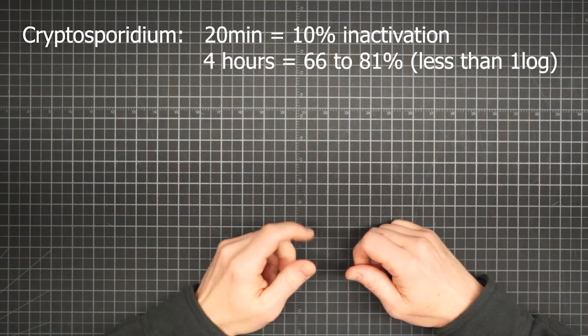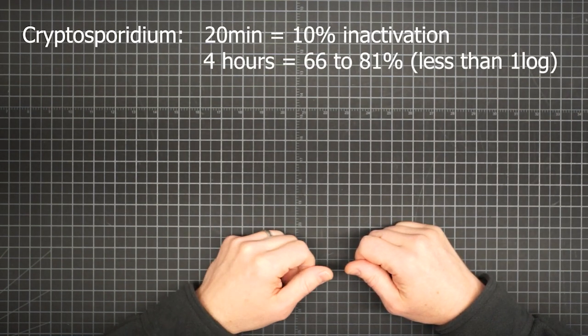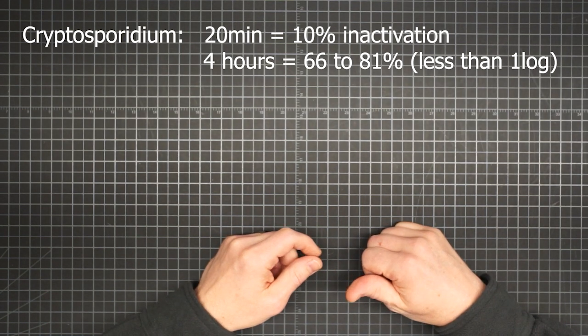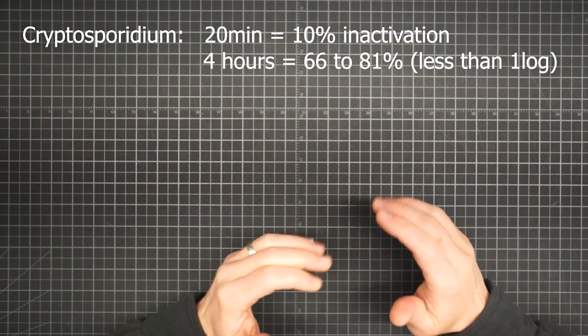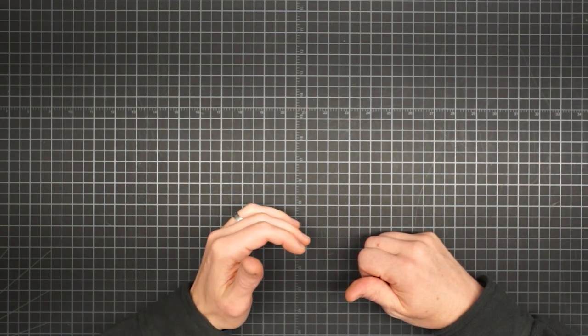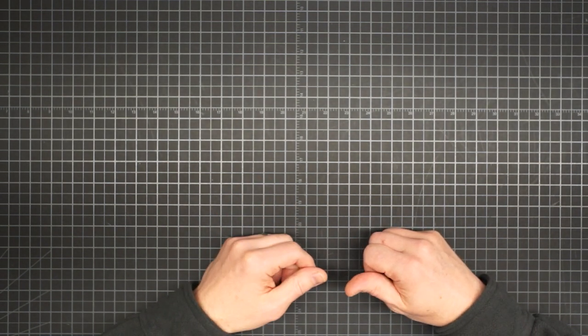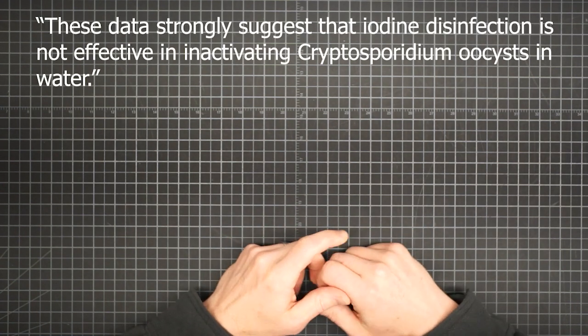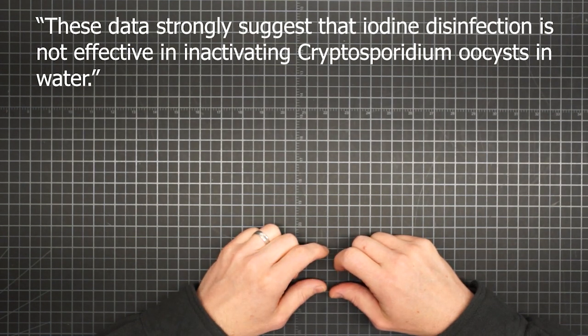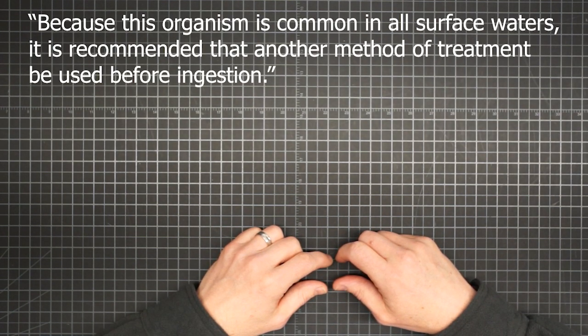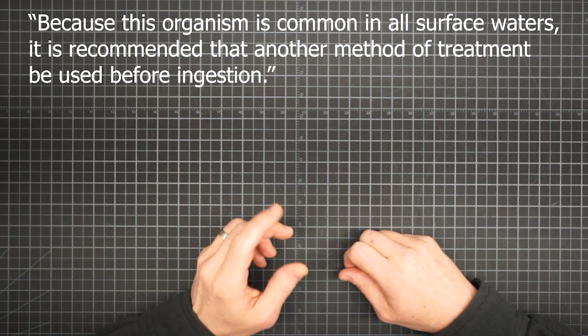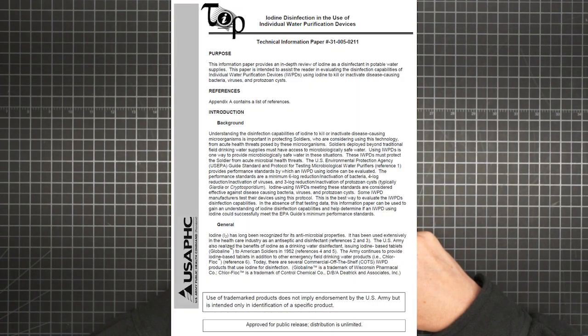Cryptosporidium is another matter entirely. After 20 minutes in the manufacturer's recommended dose of iodine solution, only 10% of Cryptosporidium oocysts were inactivated. After four hours, only 66 to 81% were inactivated. That's less than one log of reduction. Even after 12 hours, you still wouldn't have the EPA's minimum of three logs. And this led the study's authors to conclude: these data strongly suggest that iodine disinfection is not effective in inactivating Cryptosporidium oocysts in water. Because this organism is common in all surface waters, it is recommended that another method of treatment be used before ingestion.